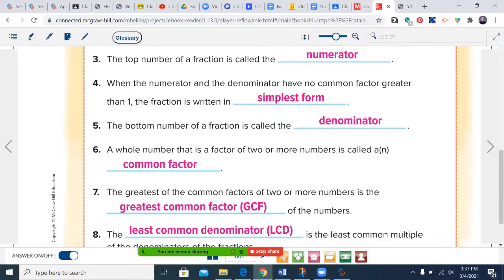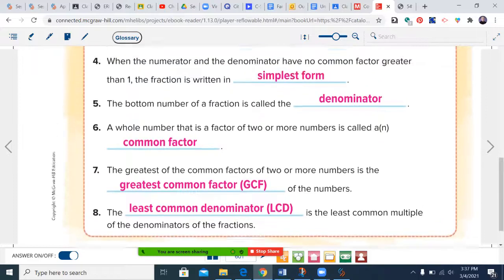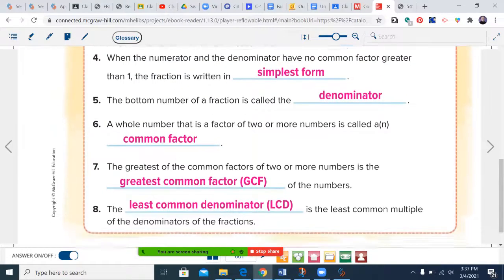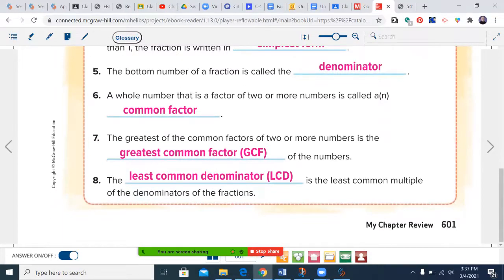The bottom number of a fraction is called the denominator. A whole number that is a factor of two or more numbers is called a common factor, and the greatest of the common factors is the greatest common factor. The least common denominator is the least common multiple of the denominators of the fractions.